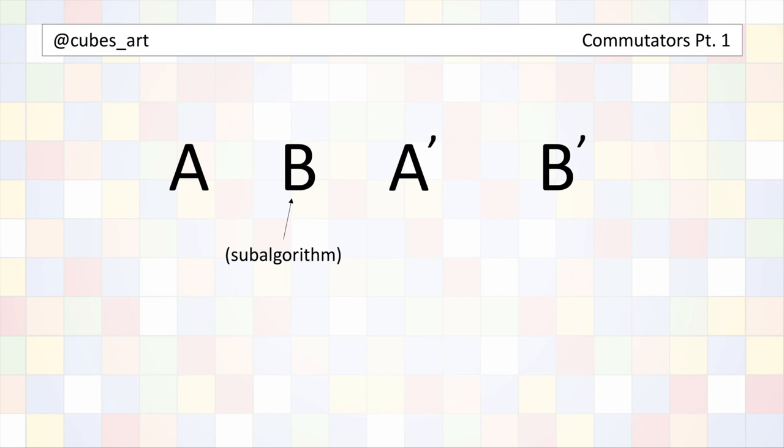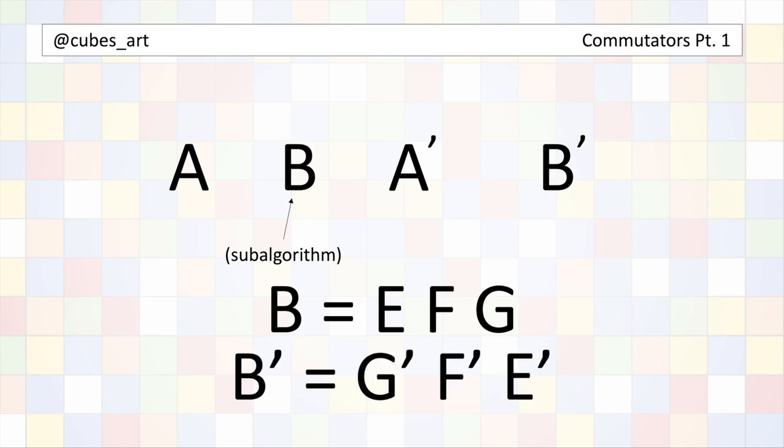So if we think of B as the sequence E, F, G, then B' would be G' F' E'. That means the B' part of the commutator is itself also a sub-algorithm.